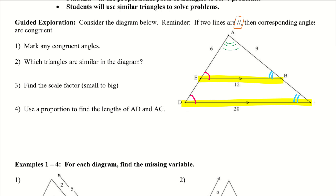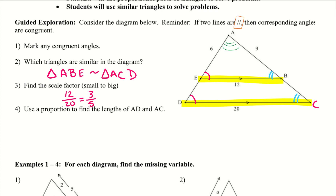We want to know which triangles are similar in the diagram. I can say that triangle ABE is going to be similar to triangle ACD — we have that smaller triangle up top and then the larger triangle, which is the entire thing. Then we want to find the scale factor, small to big. I'm going to use my two parallel lines — those lines are the bottom of my triangles and easy to see. So small to big, we'll do 12 over 20, and we can simplify that to 3 over 5. So there's our scale factor.